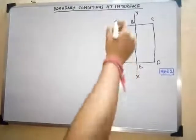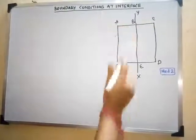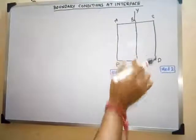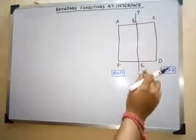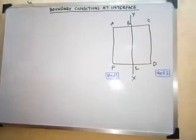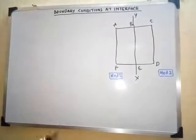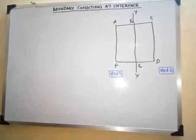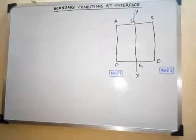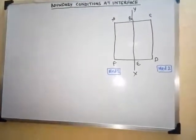From the figure, the left-hand side is medium 1, defined by region AFEB, and medium 2 is region EDCB. There are two separate mediums. We will see what are the properties of the electric and magnetic field in these two mediums. There are two separate boundary conditions: one is the boundary condition for electric field, and another is the boundary condition for magnetic field.